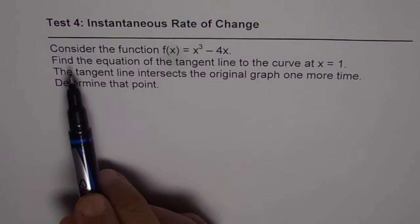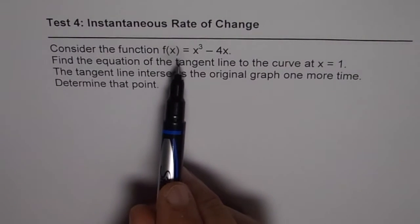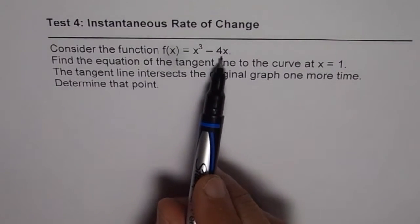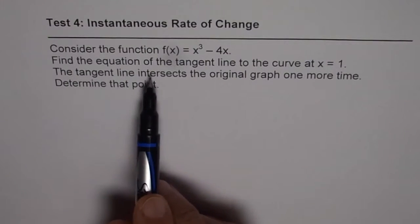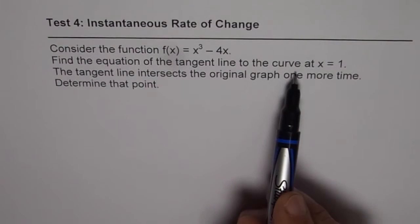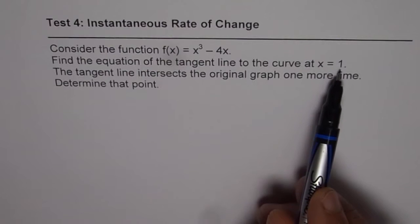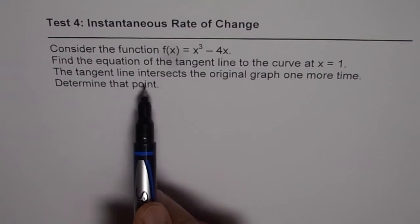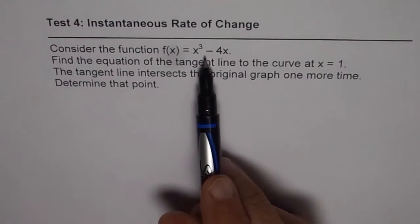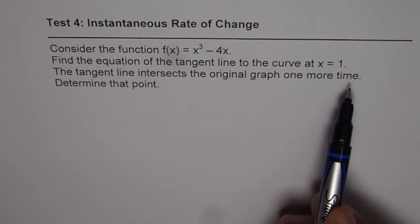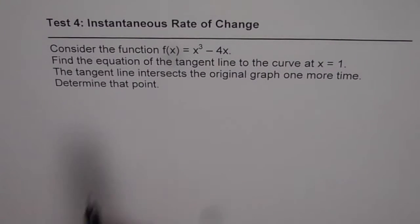The question here is, consider the function f(x) equals x cubed minus 4x. Find the equation of tangent line to the curve at x equals 1. The tangent line intersects the original graph one more time. Determine that point.